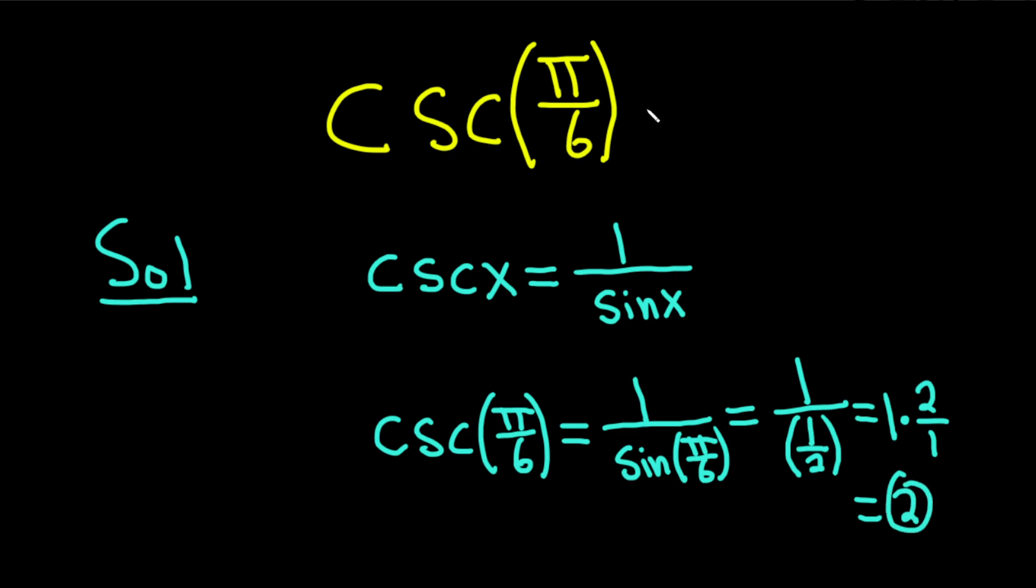That's the answer. The cosecant of pi over 6 is equal to 2. Pretty cool. I hope this video has been helpful to someone in the world. Good luck.